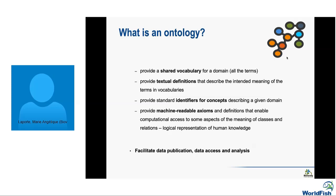So what is an ontology? An ontology provides a shared vocabulary of a given domain. All terms of the domain are defined with a textual definition describing the intended meaning. All terms are gathered into concepts, and each concept has a standard unique identifier — essentially a URL — so you can enter it in a web browser and see all related information: the definition, preferred term, synonyms, and bibliographic resources.